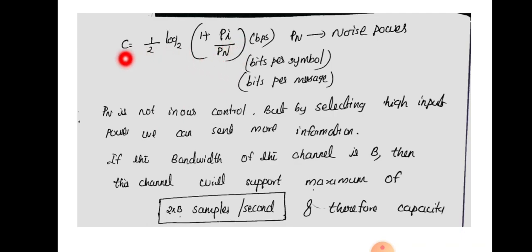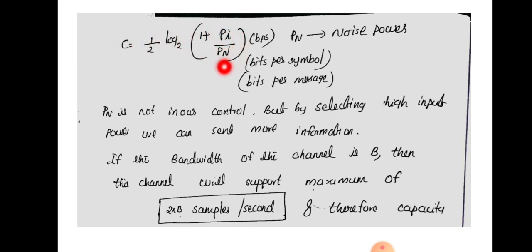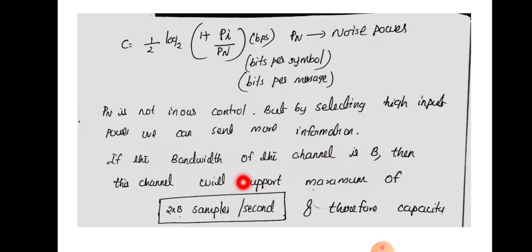In a communication channel, we cannot control the noise power because it is random and added from the outside world. So in order to improve channel capacity, we have to increase the strength of the input signal. By selecting a high input signal power, we can increase the channel capacity even in the presence of noise.